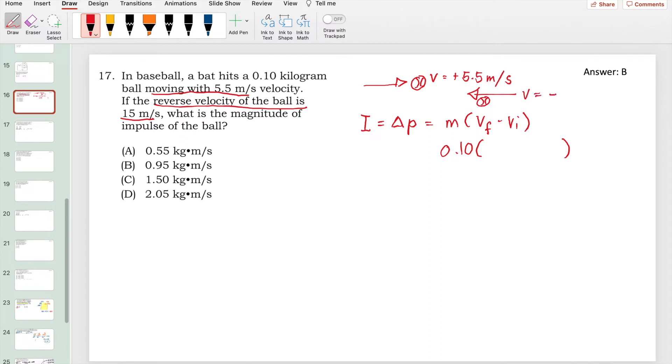So that's a negative 15 meters per second. Let's just plug in the values: a negative 15 as our final velocity, minus our initial, a positive 5.5. And if we compute that, that would be a negative 20.5 meters per second.